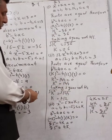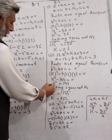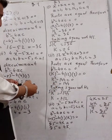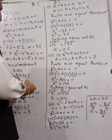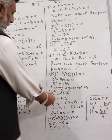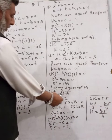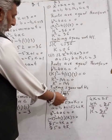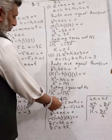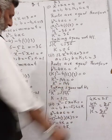Taking the square root of both sides, since we have K squared, we take the square root of both sides. K equals plus or minus the square root of 144.